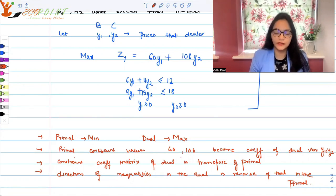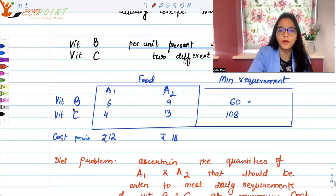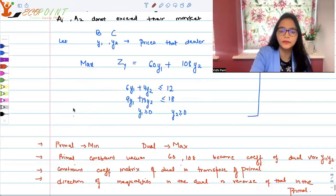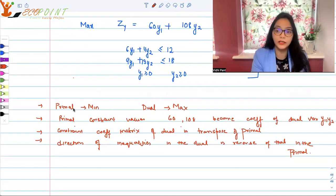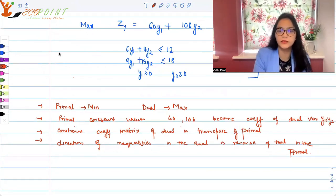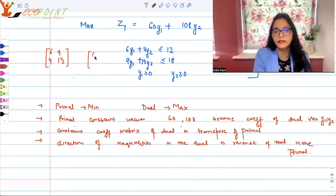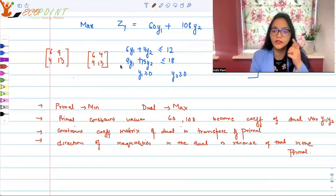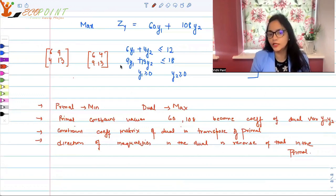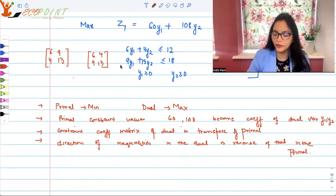Constraint coefficient matrix, if you observe the matrix form, the one that was given to you. This of the dual would be actually transpose of the primal, the values, the way they are. If it was 6, 4, 9, 13 here, what is it? It is 6, 9, 4, 13. Isn't it? So the matrix is transpose of primal and direction of inequalities in the dual is reverse of what it was in the primal.